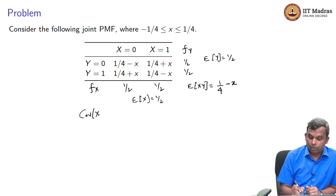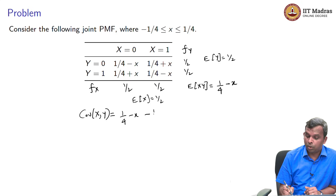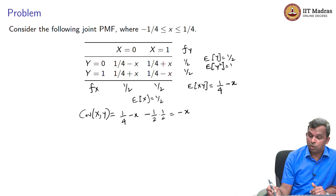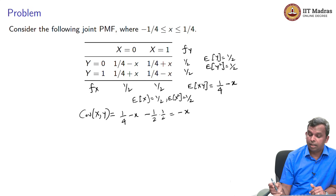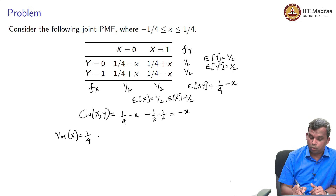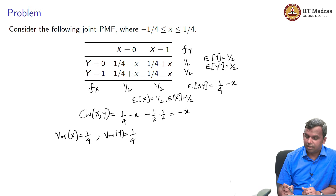The covariance of xy is 1 by 4 minus x, minus one half times one half, which gives minus x. So you can see how the covariance works out. To find rho of xy, you need the expected values of x squared and y squared. The expected value of y squared is one half, and the expected value of x squared is also one half. So the variance of x is one half minus 1 by 4, which is 1 by 4, and similarly the variance of y is also 1 by 4.